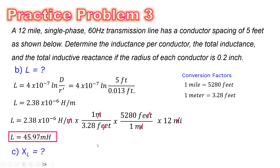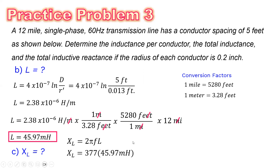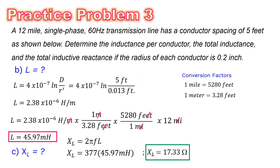For the value of the inductive reactance, the equation is X sub L equals 2 pi F multiplied by the inductance. Since the given frequency is 60 Hz, omega equals 377. Multiplying 377 by the value of the inductance, which is 45.97 millihenry, the inductive reactance equals 17.33 ohms.